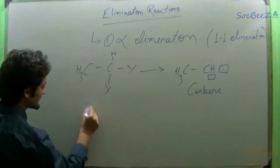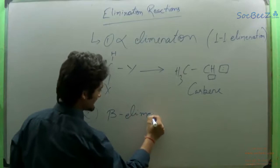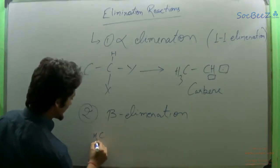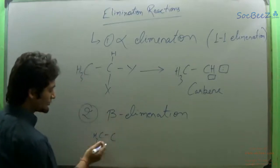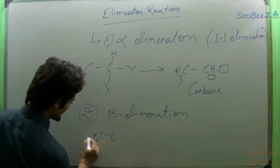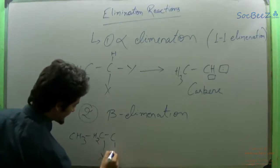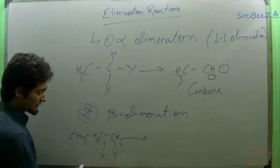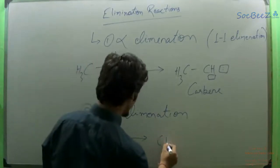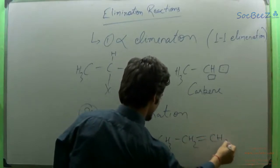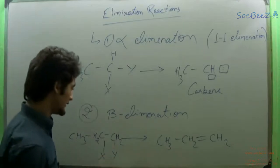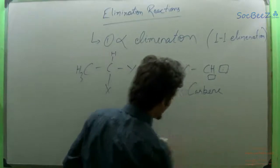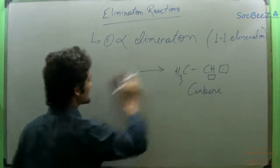The second elimination we discuss is beta elimination. In beta elimination, the two groups or atoms which are eliminated are present on two different carbon atoms. If X and Y are eliminated, a pi bond is generally formed between the two carbons, forming an alkene. The third type of elimination is beyond the scope of our syllabus, so mainly we will be discussing only these two types.